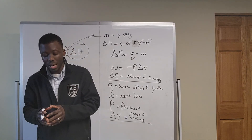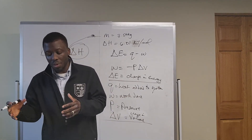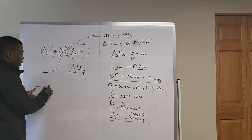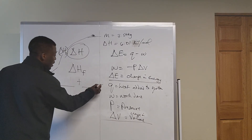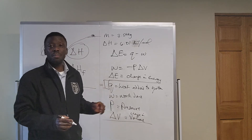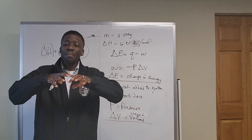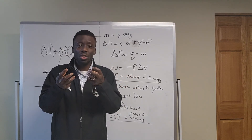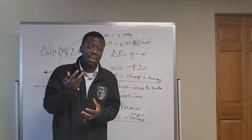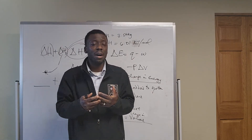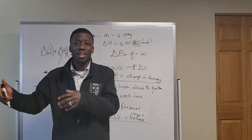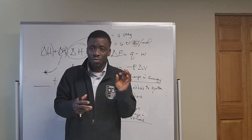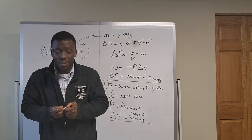Hess's law is an offshoot of the first law of thermodynamics because energy must be conserved in order for the sum of the energies of component reactions to equal the energy of the total reaction. If we take the delta H of each individual step, that gives us the total delta H of that particular reaction. You might have heard the first law of thermodynamics stated as: energy can neither be created nor destroyed. Hess's law is continuing that discussion.